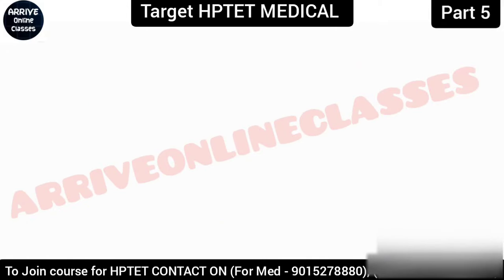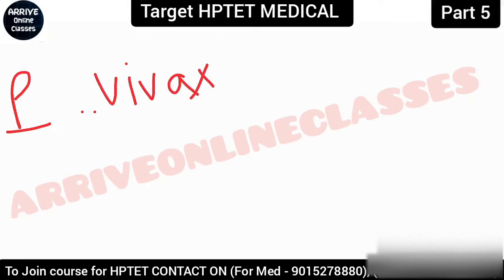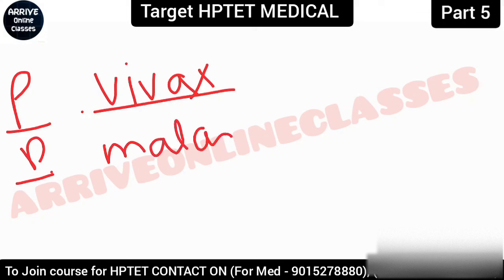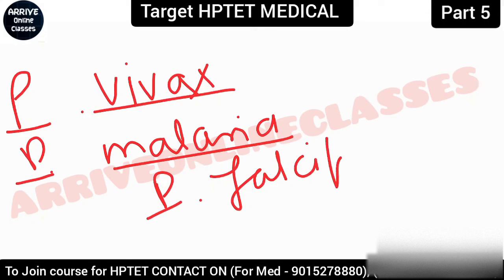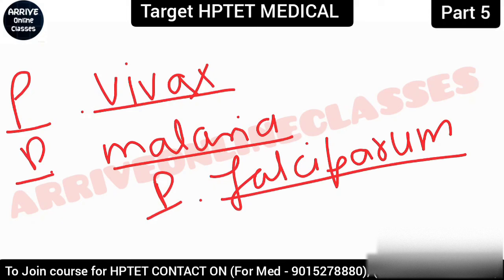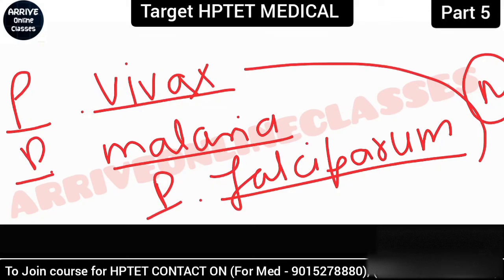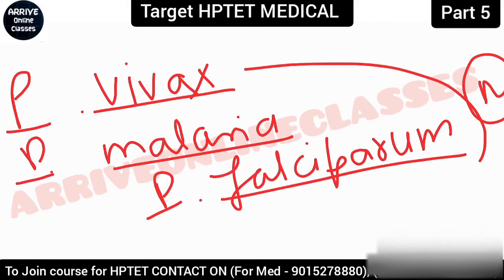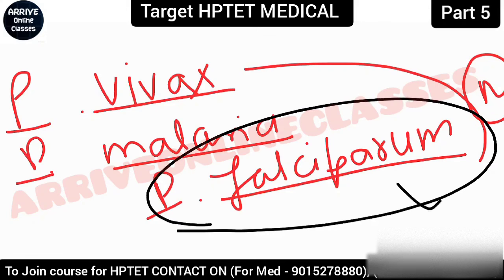There are multiple species of Plasmodium that cause malaria. The third species name is Plasmodium falciparum. All three species cause malaria. Among these, the most important to remember is that the deadliest and most malignant form of malaria is caused by Plasmodium falciparum.